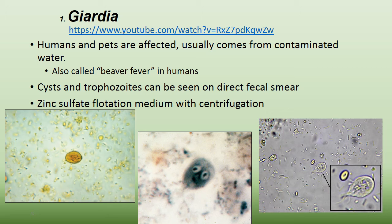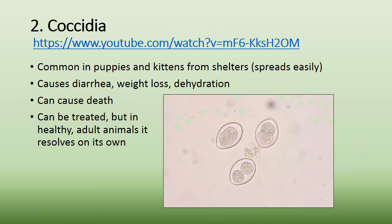Giardia affects both humans and pets and usually comes from contaminated water — it's also called beaver fever. You can contract it by swimming in contaminated lakes or stagnant water. Cysts and trophozoites can be seen on direct smear; the centrifugation fecal flotation method is better for detection. Giardia is very challenging to see microscopically, which is why IDEXX developed a SNAP test so clinicians don't have to rely solely on microscopy.